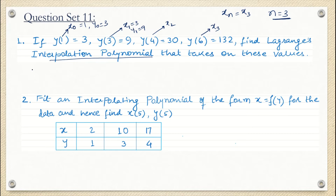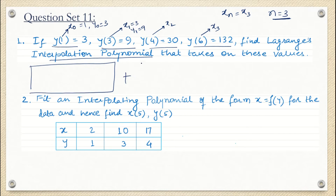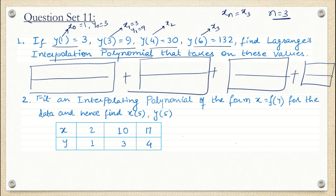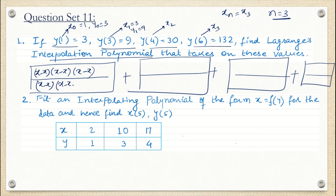We need to know n because when building Lagrange's interpolation formula we need to know how many terms there will be. The number of terms depends on each question. Since four data sets are given, we will have four terms in the formula. In each term we write numerator and denominator with expressions of the form x minus x. Since n is 3, we write three such factors in both numerator and denominator, and then multiply by the corresponding y value.